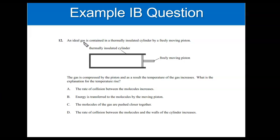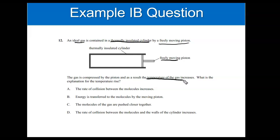An ideal gas is contained in a thermally insulated cylinder, which basically means that heat in the cylinder can't go to the outside, by a freely moving piston. So this top right here is a freely moving piston — it's not fixed in place. The gas is compressed by the piston, and as a result the temperature of the gas increases. What is the explanation for the temperature rise? This is one of those questions where you have to be very careful to answer the question being asked. See if you can pause and answer this.